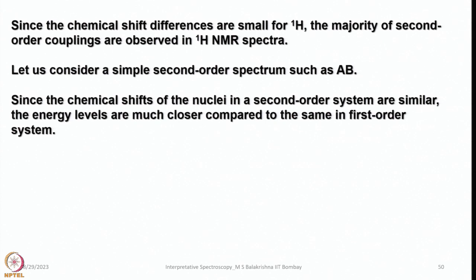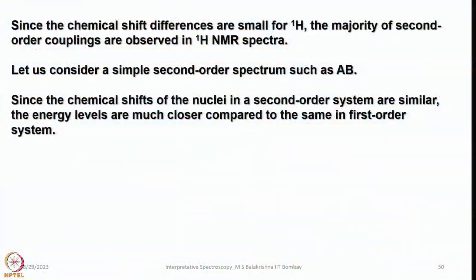Only in exceptional cases, such as coordination compounds where a metal-to-hydrogen bond is present, may we come across up to 60 ppm. Otherwise, in most organic molecules it does not go beyond 10 ppm. As a result, since the chemical shift differences are very small in ¹H, the majority of second order couplings are observed in ¹H NMR spectra, and we also come across them in phosphorus NMR.